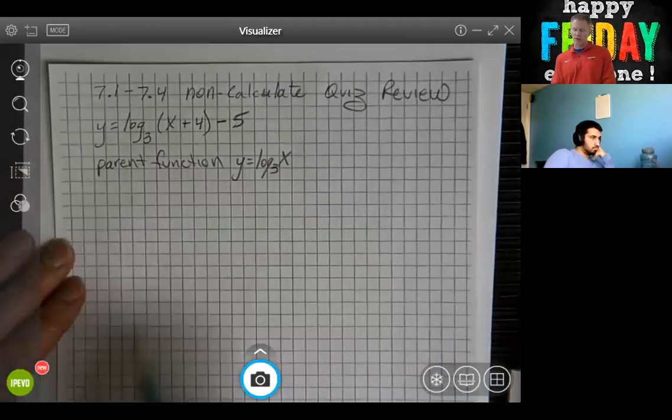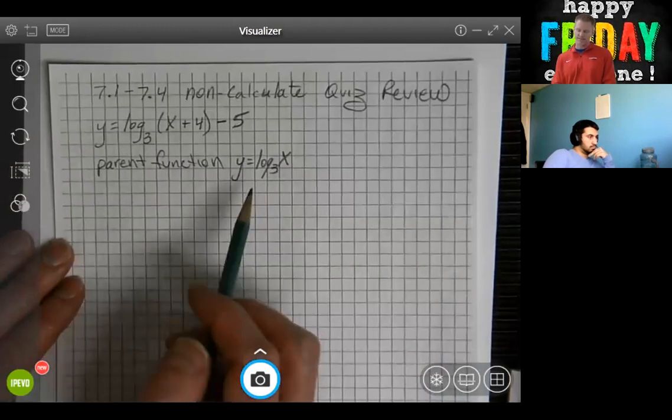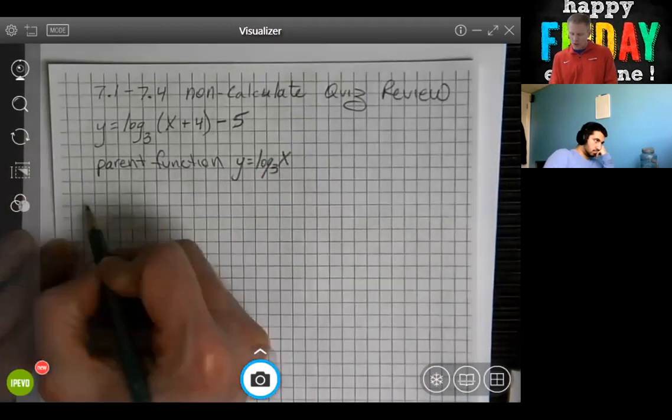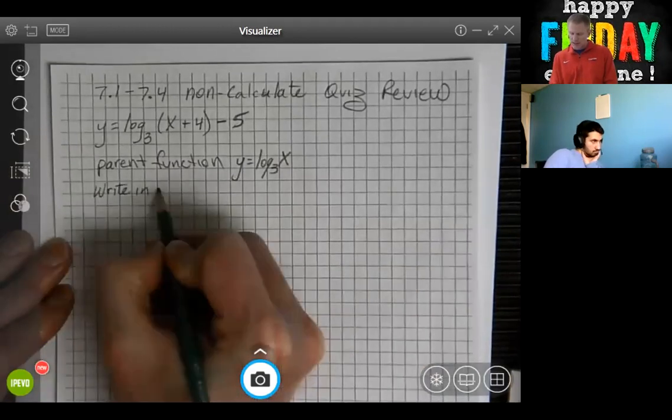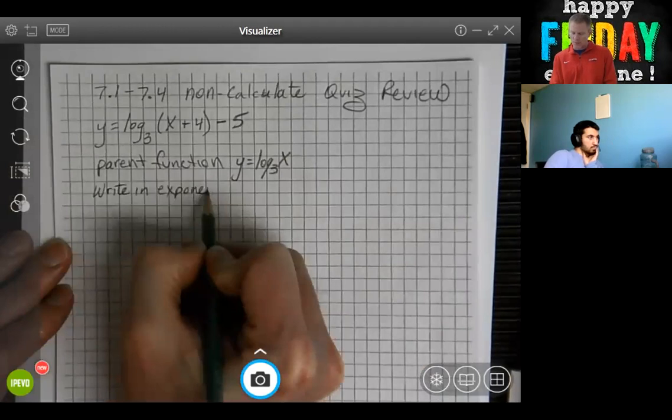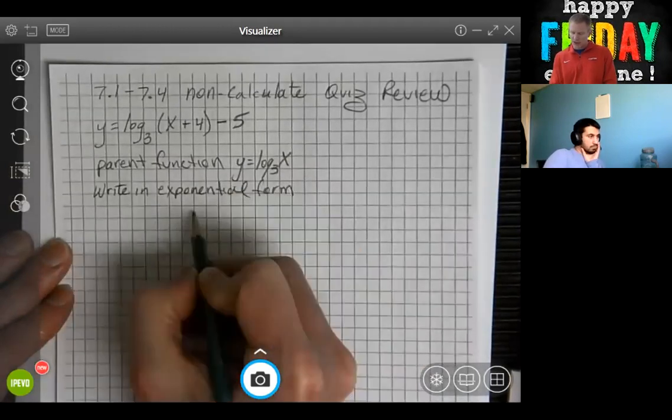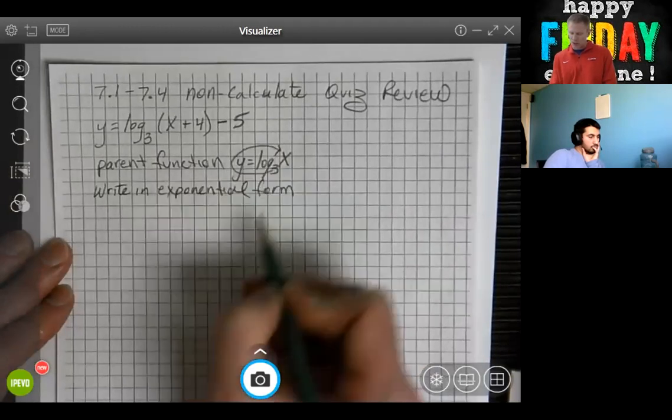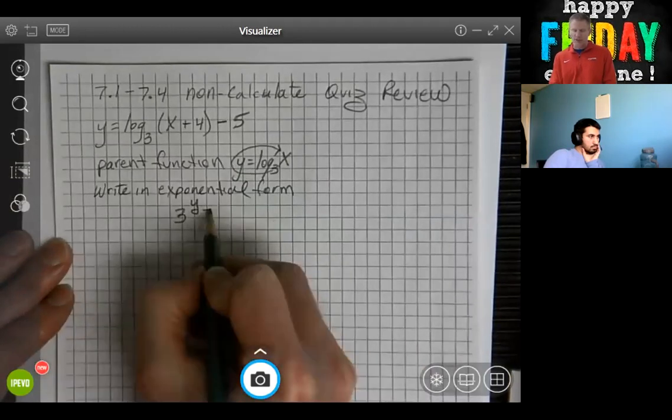So now we're going to look at the table that would produce this exact logarithm. We are going to write in exponential form. So we take the 3, we go by the y, and we finish with the x. So 3 to the y power equals x.